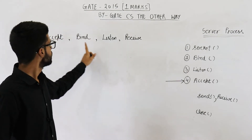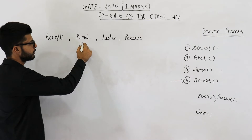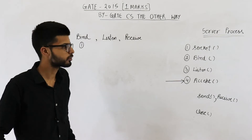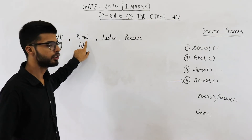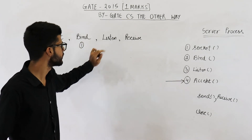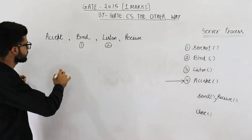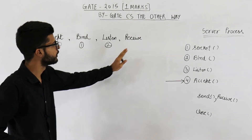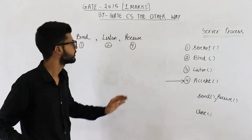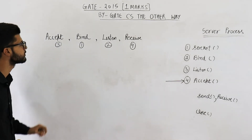So this is the order. The first one must be bind. They haven't mentioned socket in these four, so we'll assume that socket is already created. Then we need to bind that socket to some address. After that, we need to listen to that socket. Then if someone is trying to connect, we'll accept that connection. After this, we'll receive data. We can even send data, but these four will be executed in this order. So this is the correct answer to this question.